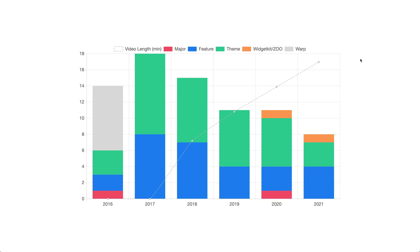We have prepared some fun charts to show you the progress of YOOtheme Pro in numbers. Here are our theme package and feature releases of YOOtheme Pro, as well as our major product updates. In this chart, you can see how the focus has shifted from only theme releases to having frequent feature releases as well. Lately, we also started bundling features into fewer but larger releases, which can be seen from the total length of our feature videos.